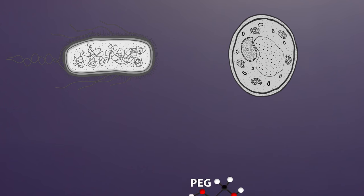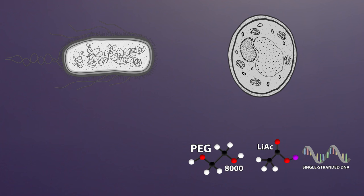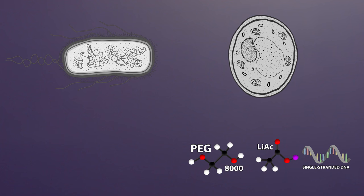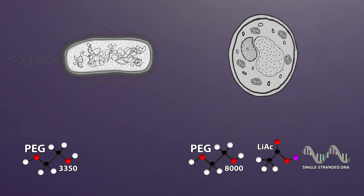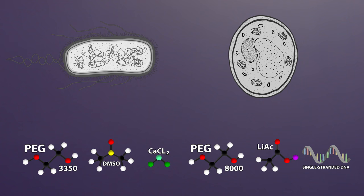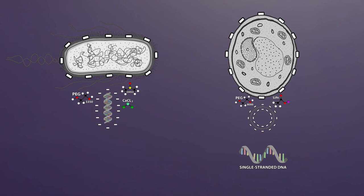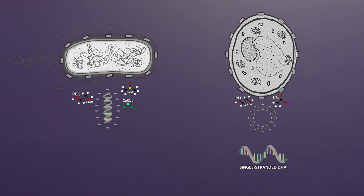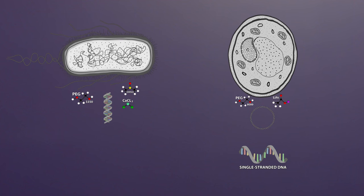This process called transformation requires a few components. The yeast experiment uses polyethylene glycol or PEG, lithium acetate, and single-stranded carrier DNA derived from salmon. The E. coli experiment uses a different concentration of PEG, dimethyl sulfoxide, and calcium chloride. These components perform several key functions such as shielding the negative charge of both the DNA and cell wall—DNA would otherwise be repelled—and making the cell wall more porous.